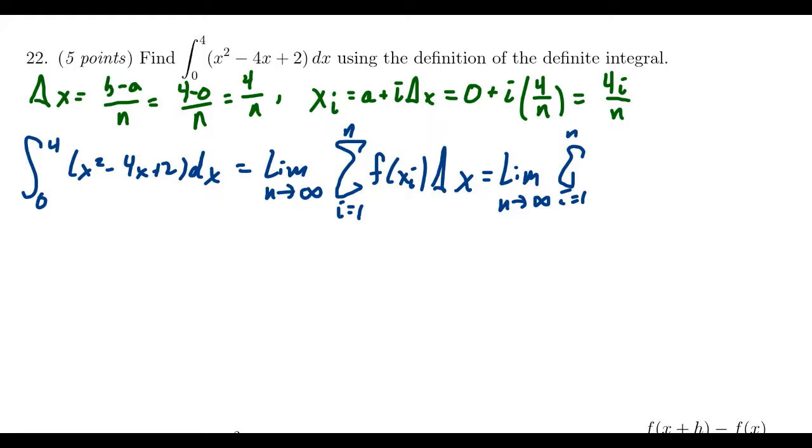We're going to take this sum where i ranges from 1 to n. Now we're going to plug in the specifics of this function. So we have the function f of x, which is given right here. And so for each x, we're going to replace it with an xi. So I'm going to use square brackets to help set this thing apart. So we have to take xi squared, which is going to be 4i over n squared. Then we subtract from it negative 4 times xi, which is 4i over n. And then we're going to add 2 to that. Then we have to times that by delta x, which delta x was 4 over n.